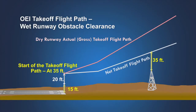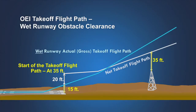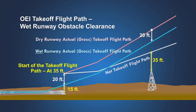The takeoff flight path and net takeoff flight path begin at 35 feet above the runway surface. For airplanes with FAA-approved wet runway takeoff data, this can result in lower-than-normal obstacle clearance in the event of an engine failure near V1. Because the airplane is allowed to be at a height of 15 feet above the runway surface at the end of the one-engine-inoperative takeoff distance for a wet runway, the airplane can be 20 feet closer vertically to the obstacle compared to taking off from a dry runway.